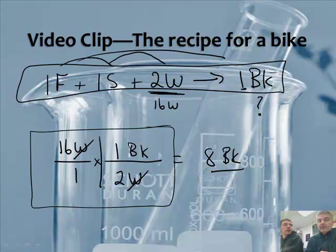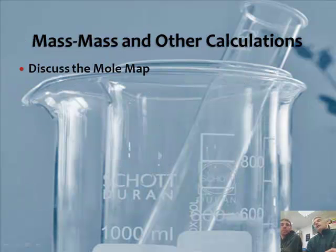Now, there's one assumption we're making here. We're assuming that we have plenty of frames and seats. And later on, we'll talk about what happens when you don't have plenty of frames and seats. But for now, assume that if there are more than one reactant, that you have plenty of the other one, and that you're only limited by the one that you have.